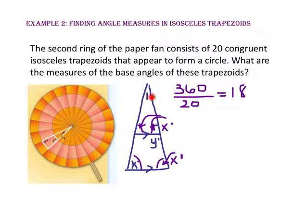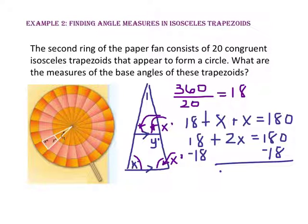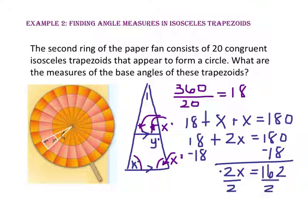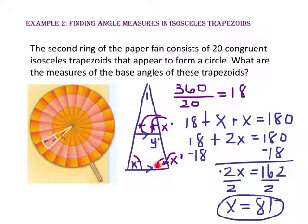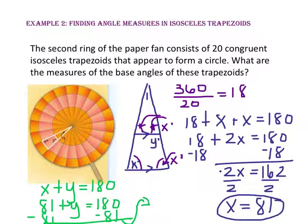Since angle 1, X, and X form a triangle, we have 18 plus X plus X equals 180. So 18 plus 2X equals 180. Subtracting 18 from both sides, 2X equals 162. Dividing both sides by 2, X equals 81. Since this angle and the adjacent angle are same side interior angles, X plus Y equals 180. So 81 plus Y equals 180, and subtracting 81 from both sides, Y equals 99.